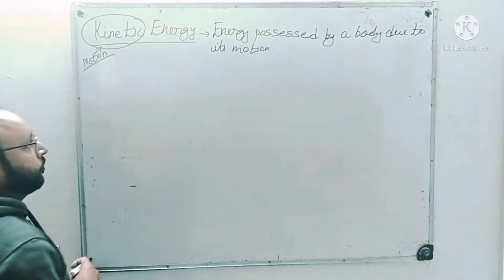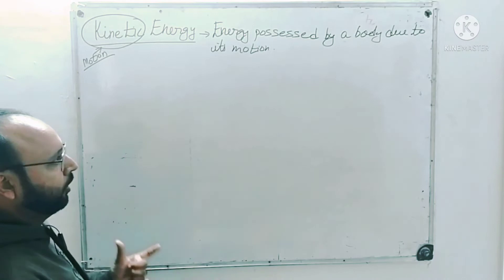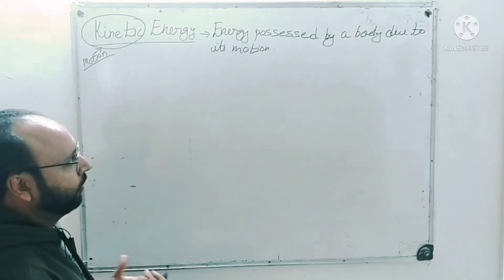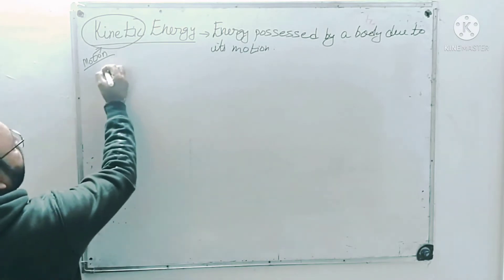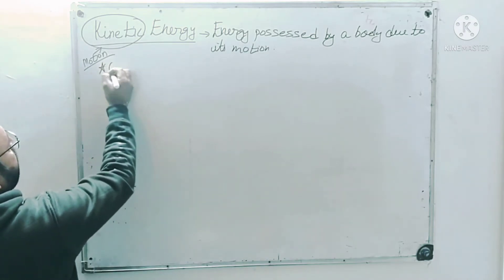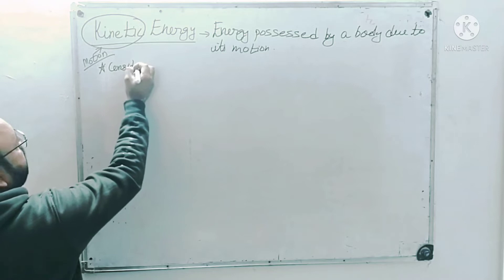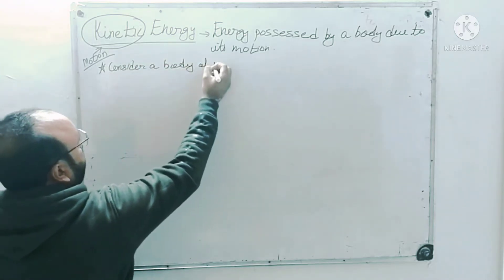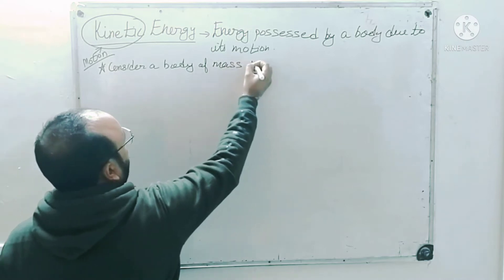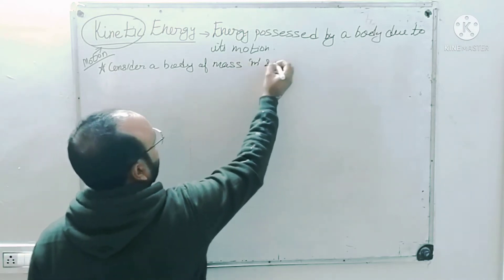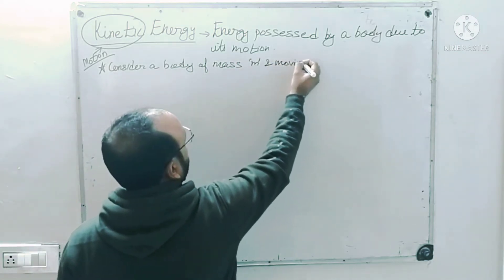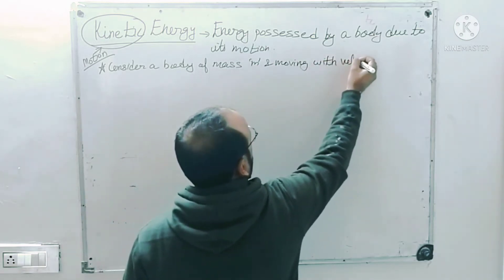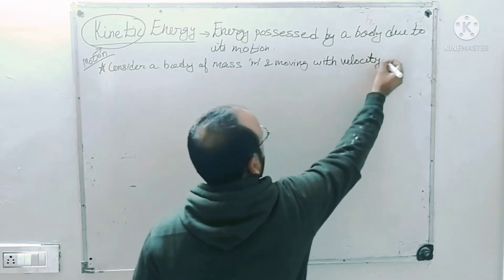To prove kinetic energy, we consider a body of mass m which is moving with velocity v. So consider a body or object of mass m moving with velocity v.